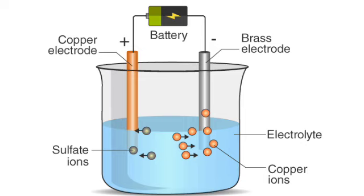When tomato juice is used, the bulb glows dimly. Such conductors allow little electricity to pass through them — these are called weak conductors. When dilute sulfuric acid is used, the bulb glows brightly; electricity passes fast through such materials — these are called good conductors. When distilled water is used, the bulb does not glow; such materials are called insulators.